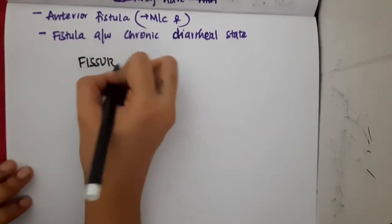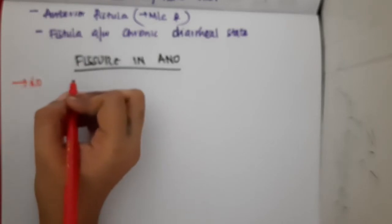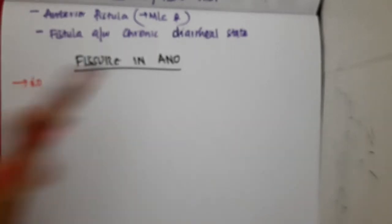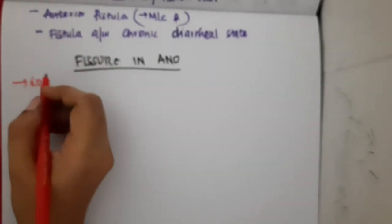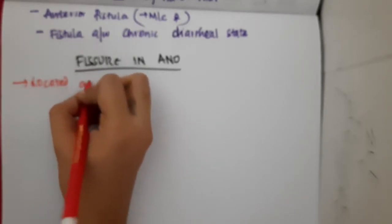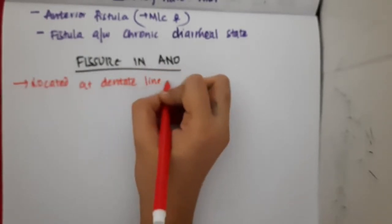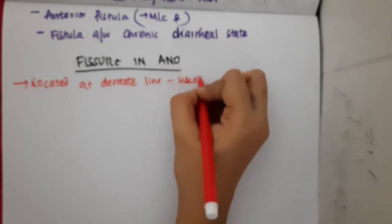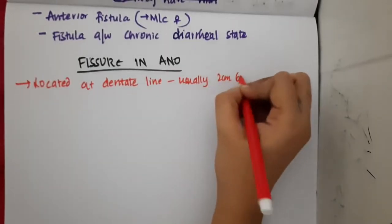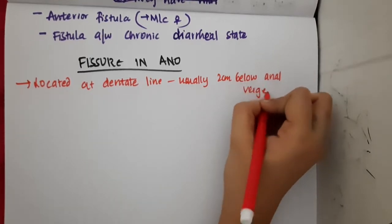Let us learn some important points about fissure in ano. What is fissure in ano and where is it located? A fissure is nothing but a break or split in the tissues. Fissure in ano is located at the dentate line, usually about two centimeters below the anal verge.